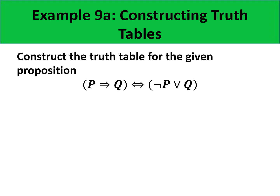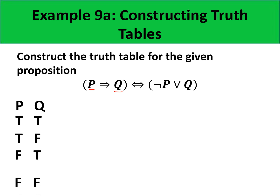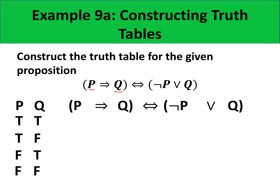Now let us illustrate how to construct truth tables from a given proposition. First, you need to count the number of distinct variables of the proposition. In this example, we have two distinct variables. Next, we compute the number of rows — in this case, 2 squared equals 4. Then we look for the expressions inside the innermost grouping symbol and evaluate the logical operator in that group.